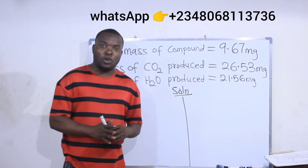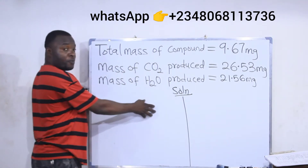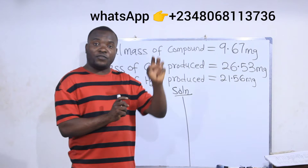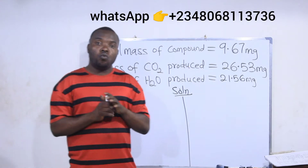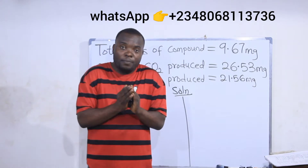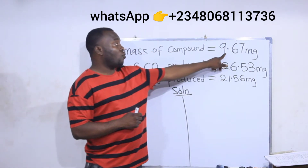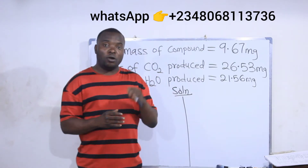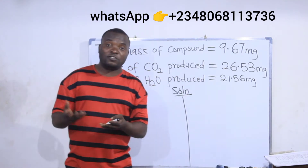Since it is an organic substance, we are already aware that carbon will be present in the compound, and hydrogen will also be present. But we are not yet sure if oxygen will be there. When we find the mass of carbon and the mass of hydrogen present, we add them together. If they are equal to the total mass of the organic compound, it simply means that oxygen will not be present. But if their sum is not up to the total mass, then we use oxygen to make it up.